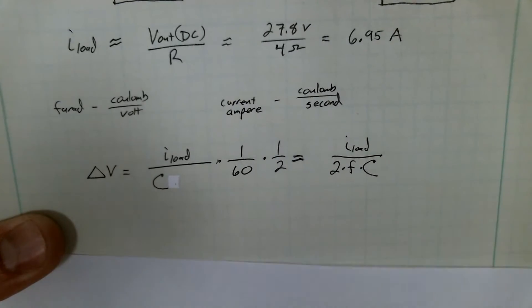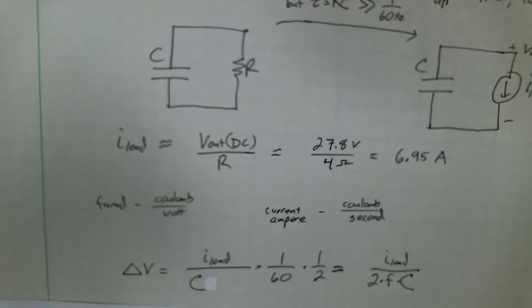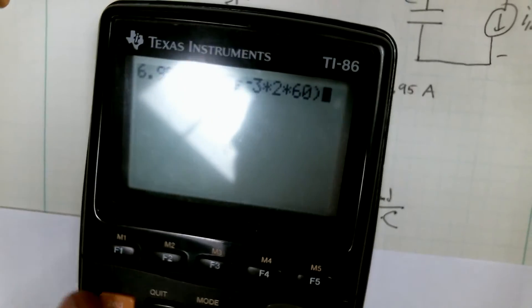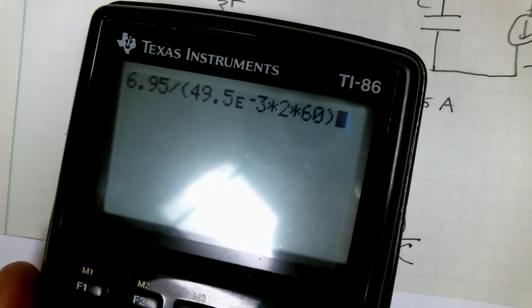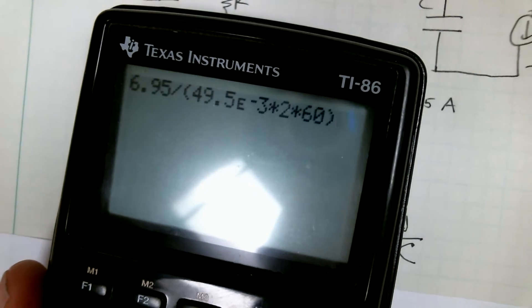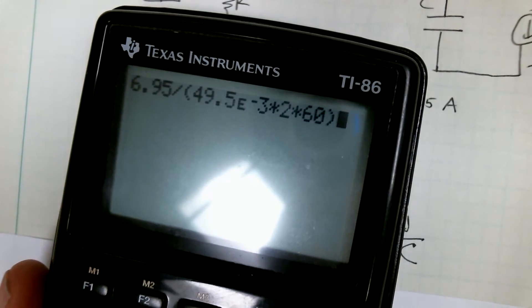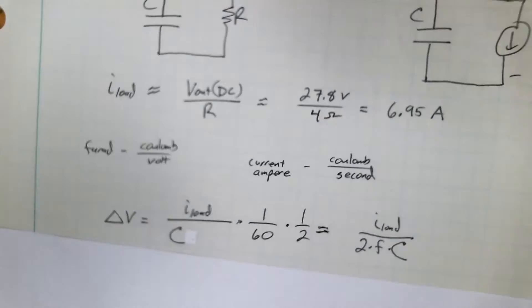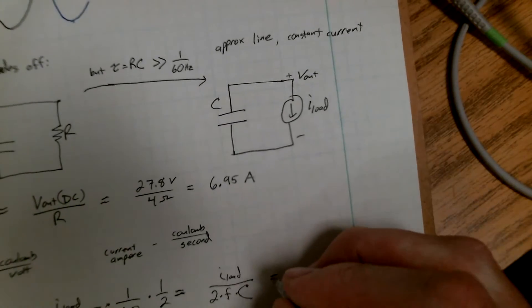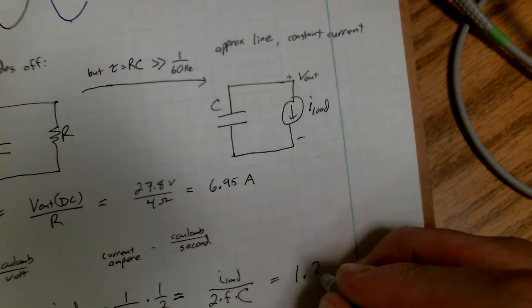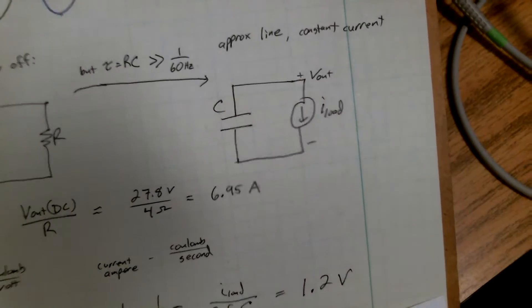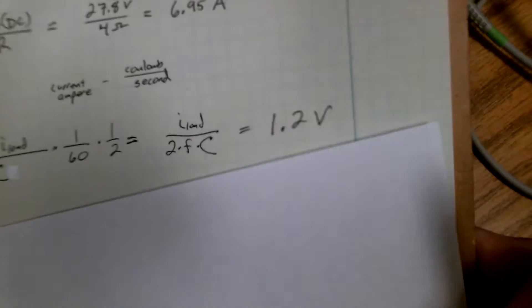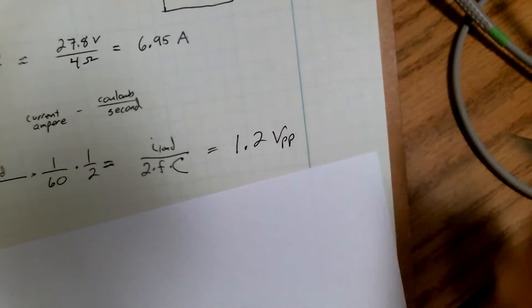If we calculate that out with our numbers - my calculator says when I turn it on - with 49.5 millifarads, 60 Hertz (I'm in the U.S.), and 6.95 amps, I get 1.17 volts. So delta V is 1.2 volts, and because of how we set this up, this is a peak-to-peak measurement, so I'll put V_pp.